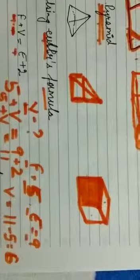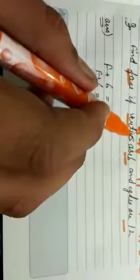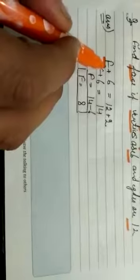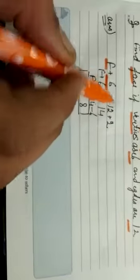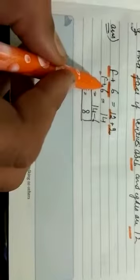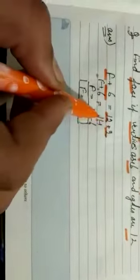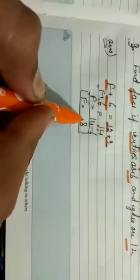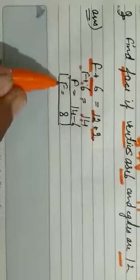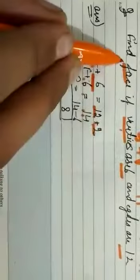Here is a question for you: find the faces when vertices are 6 and edges are 12. Using the formula, F plus V equals E plus 2: F plus 6 equals 12 plus 2, which is 14. By transposition, F equals 14 minus 6, which is 8. So when vertices and edges are given, we are able to find the faces.